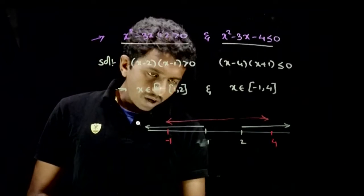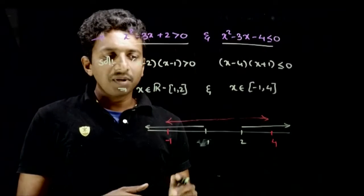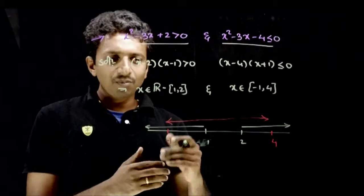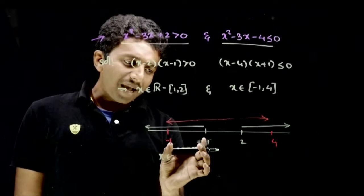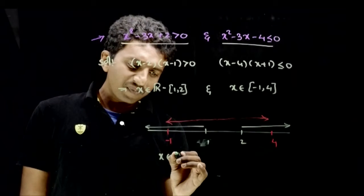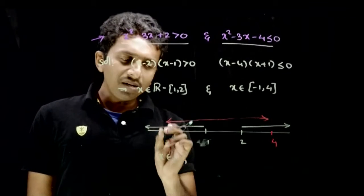So what is the common solution? This means what are the values of x that satisfy both the answers. So x belongs to minus 1 to 1. Minus 1 is closed because minus 1 is in both solutions, to 1 open.